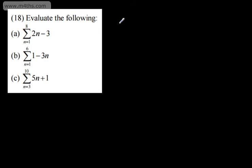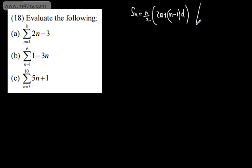The sum of n terms is equal to n over 2, times 2a plus (n minus 1) multiplied by d. Or we can use the sum of n terms equals n over 2 times (a plus l), where a is the first term and l is the last term.